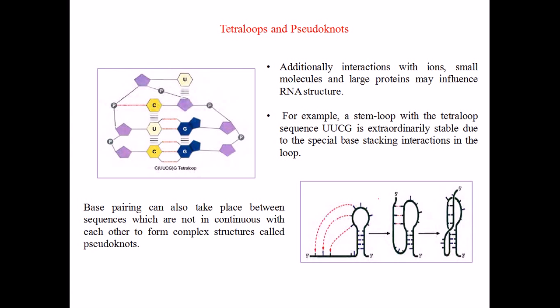These structures are important. Now if we look at some of the pretty unusual secondary structures, they are something called tetraloops and pseudoknots. So what are tetraloops and pseudoknots?